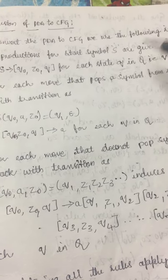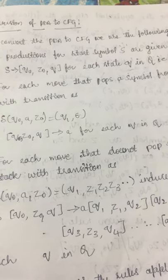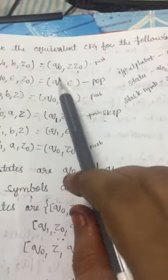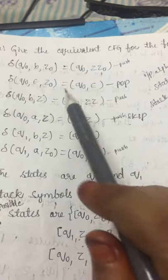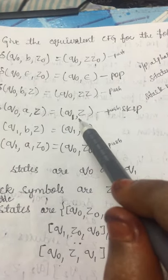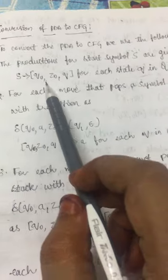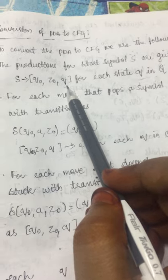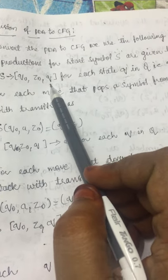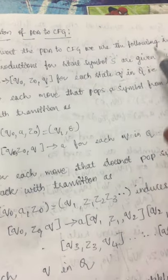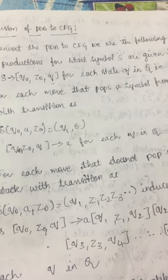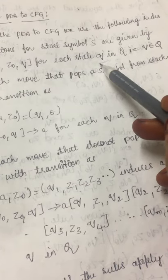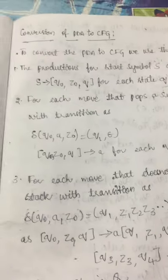Each state Q means: if we observe the PDA here, the states are Q₀ and Q₁. For Q₀ and Q₁ we need to use these states in the production. Once we consider Q₀ state and the other time we consider Q₁ state. That is the reason Q refers to the states present in the set capital Q, i.e., Q belongs to capital Q.